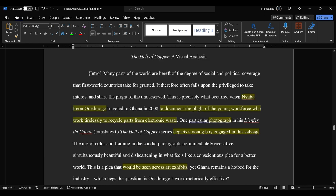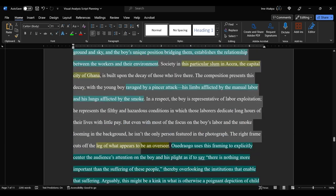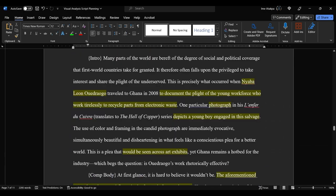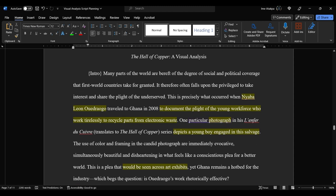So here's my draft. This is going to be available links in the description for you to look at. But what I really want to focus on with this is taking a look at the highlighted sections, especially in this introduction, because you don't have to just list out elements of the rhetorical situation. These can be embedded into your sentence structure. My introduction is always just to state a relevant statement of fact. "Many parts of the world are bereft of the degree of social and political coverage that first world countries take for granted."